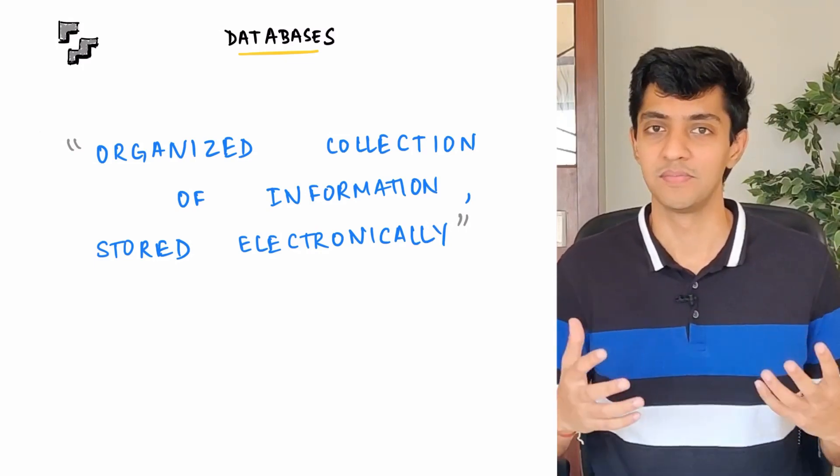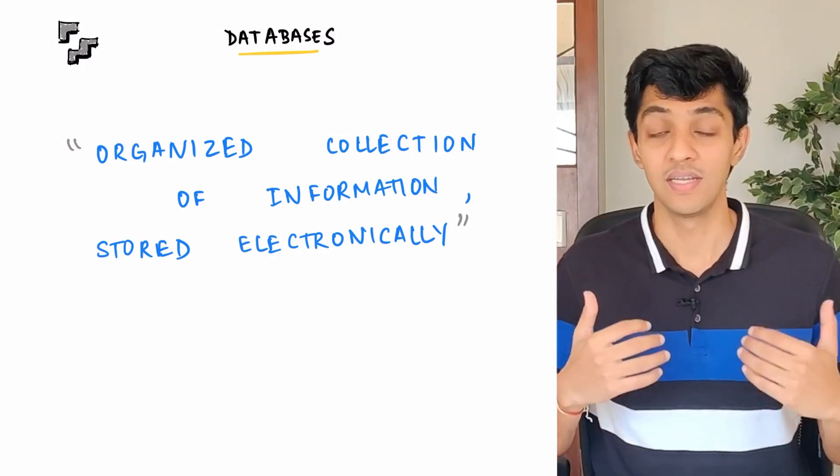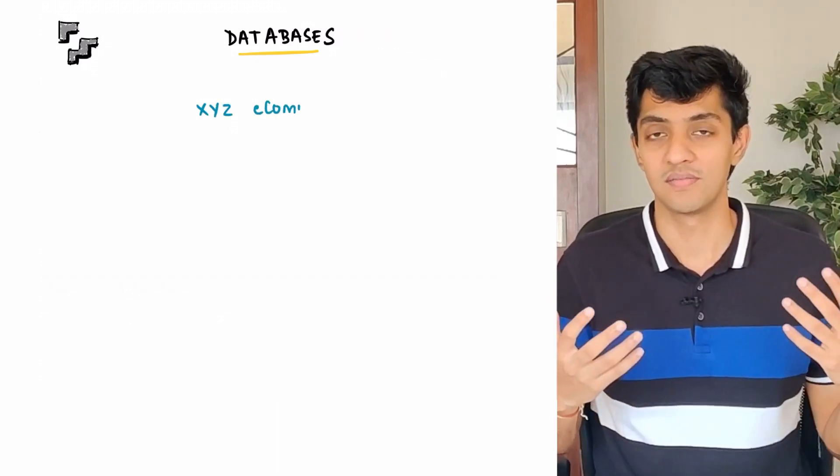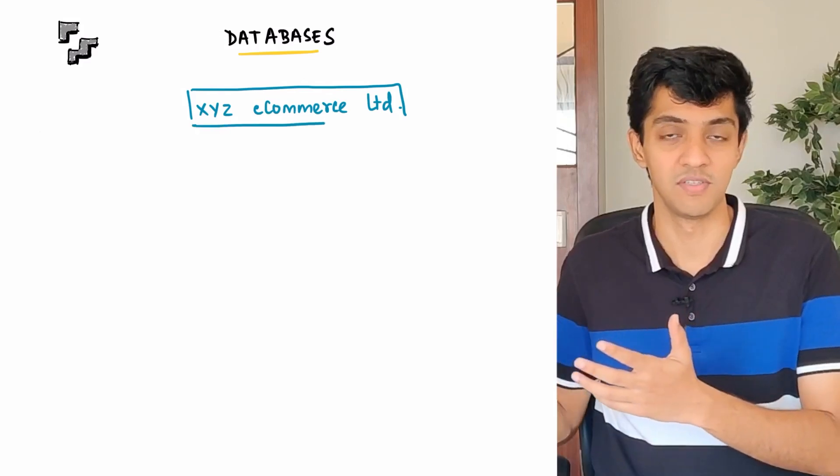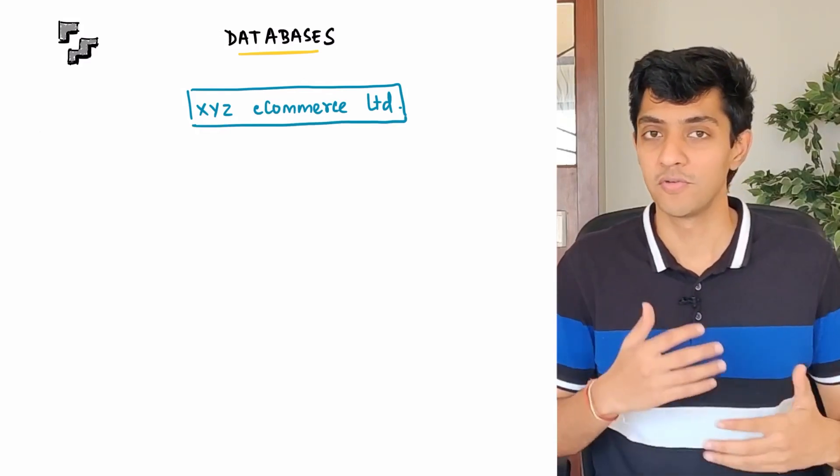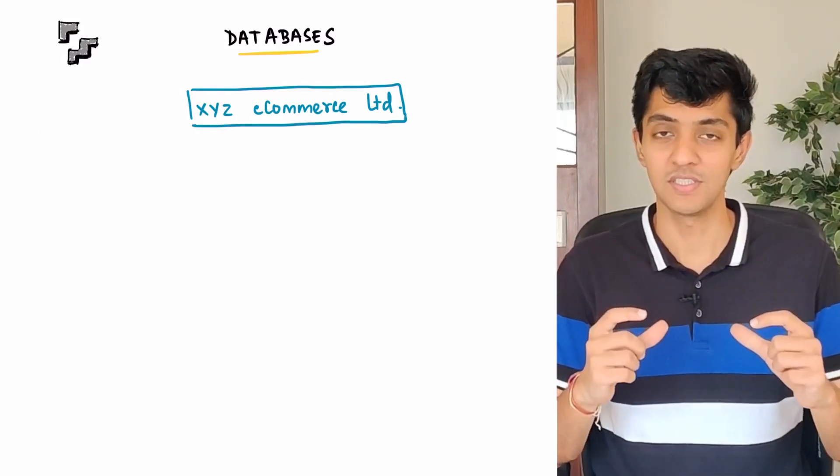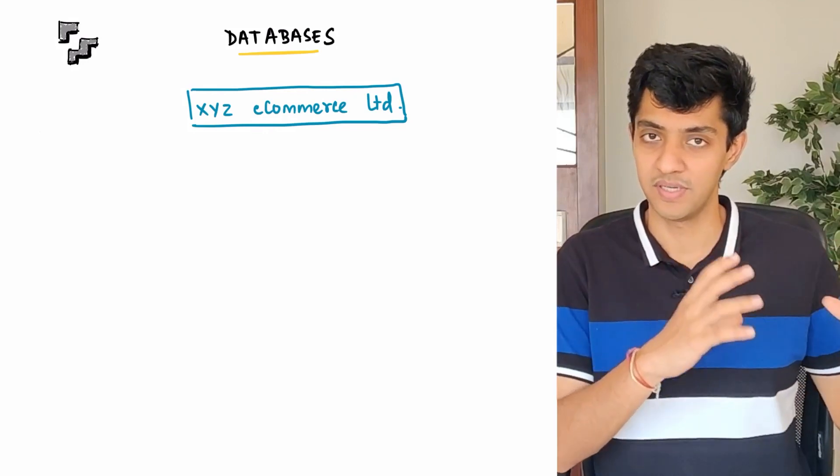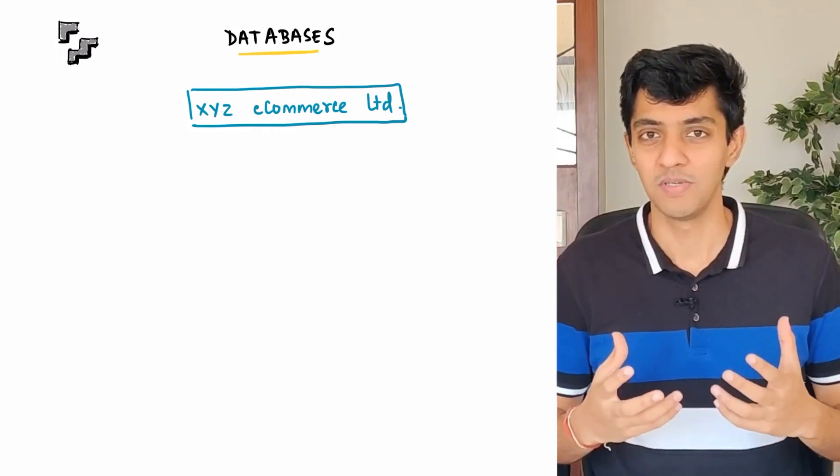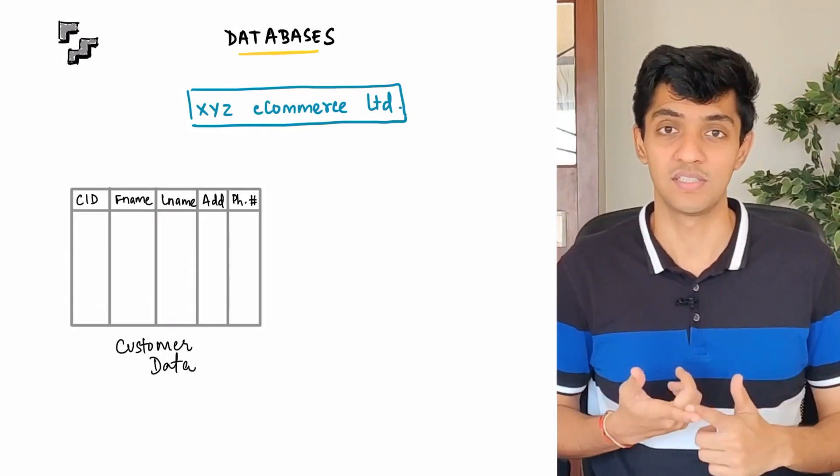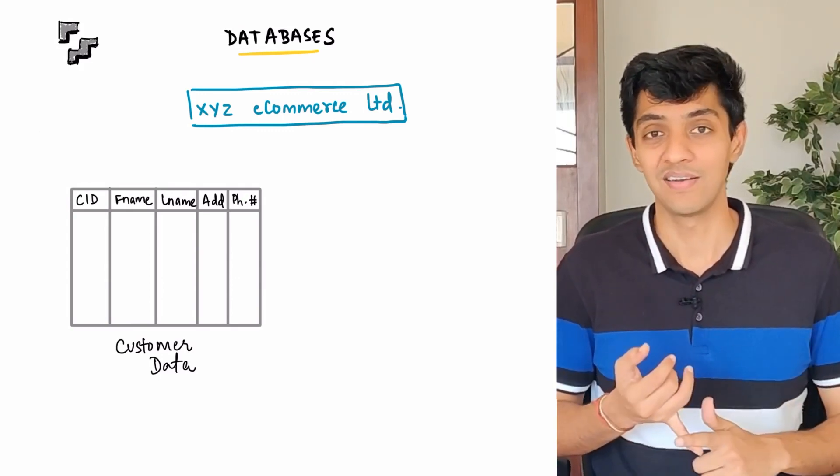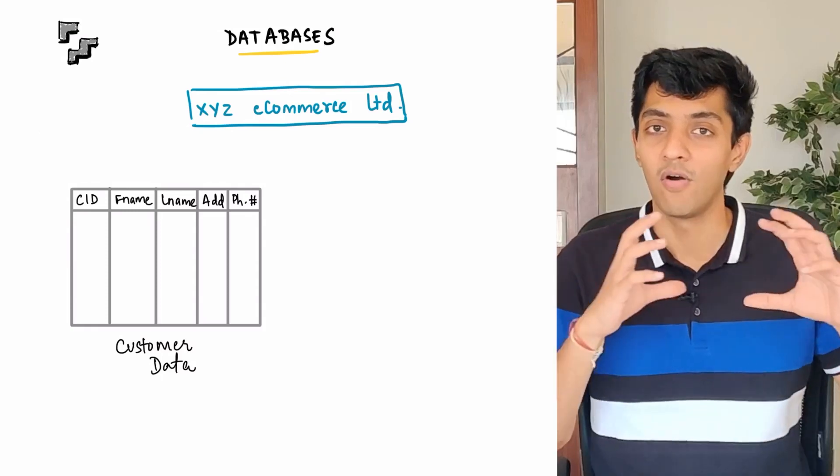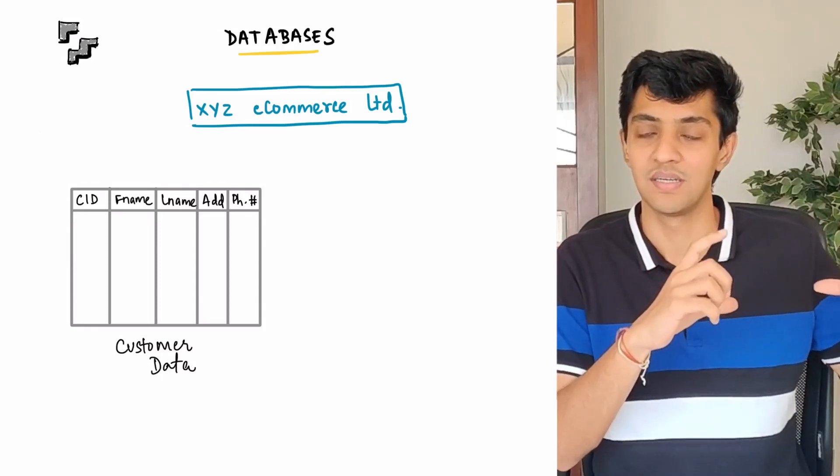Let's take an example and see where the database could be used. Now let's say you're running an e-commerce company. Your customers are able to come to the site and able to purchase some product from the site and then possibly even track their order. Now in order for you to store the customer information, you're going to need some sort of a table. Now this customer information could be the customer ID, which is the unique customer ID per customer, the first name of the customer, the last name of the customer, the address and the phone number.